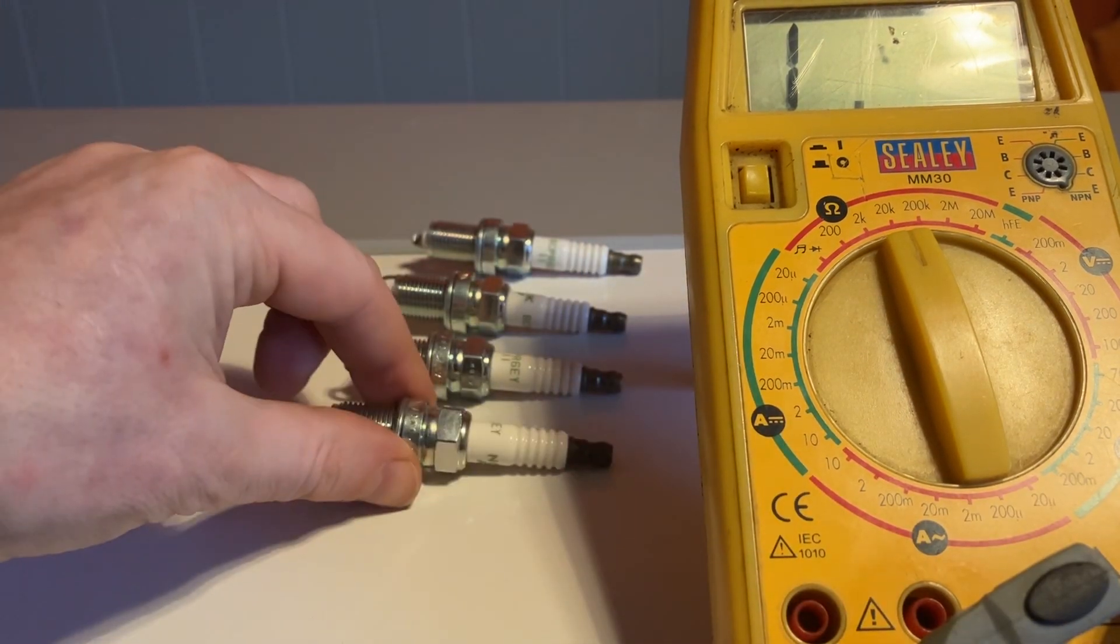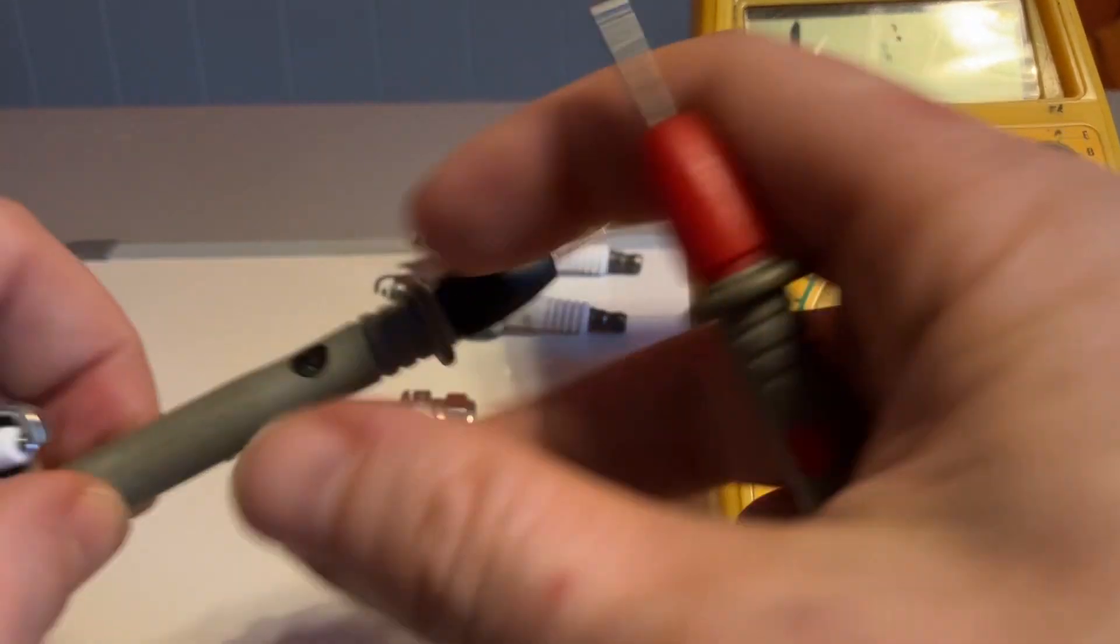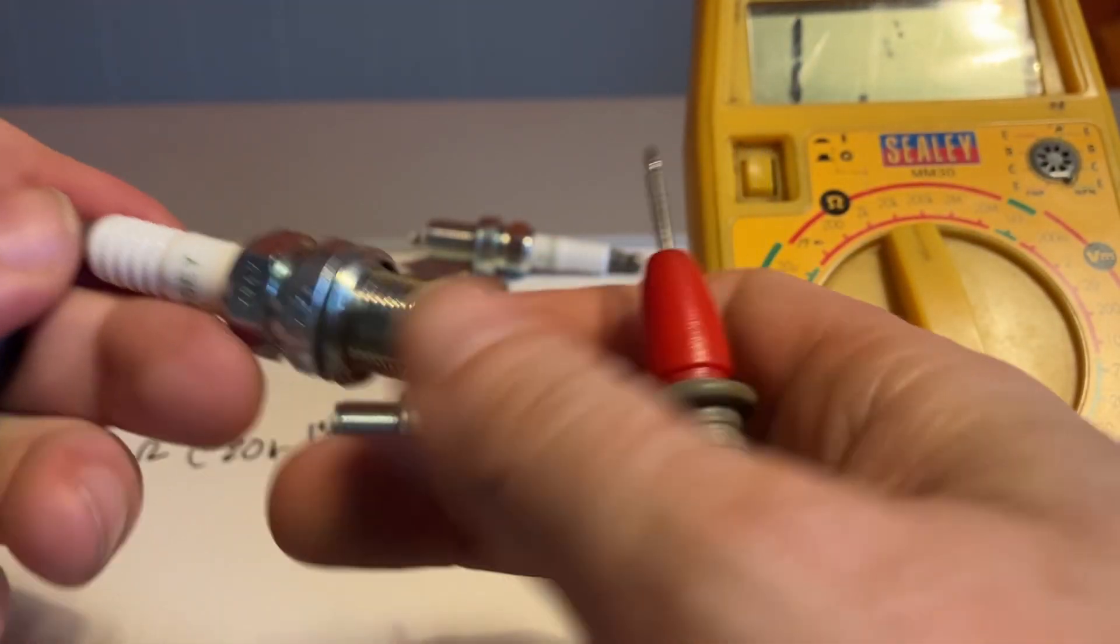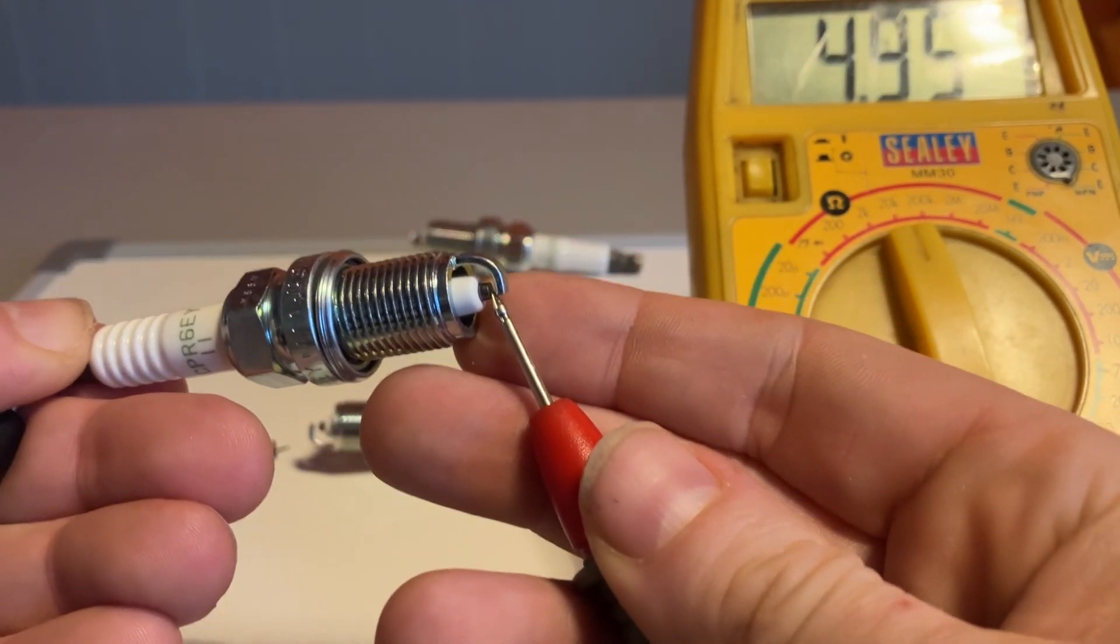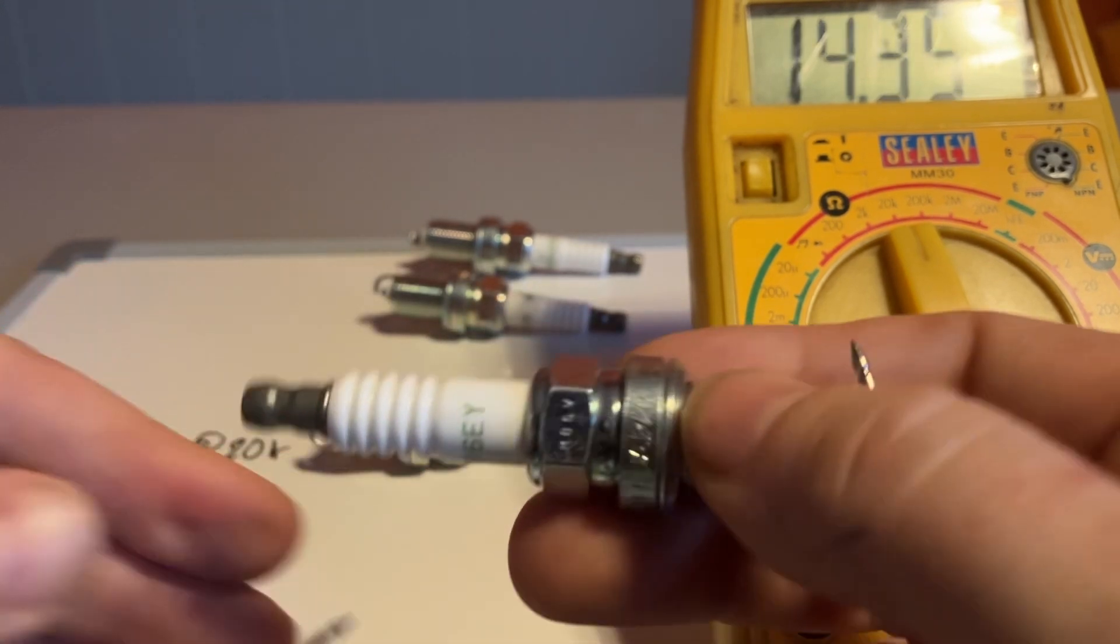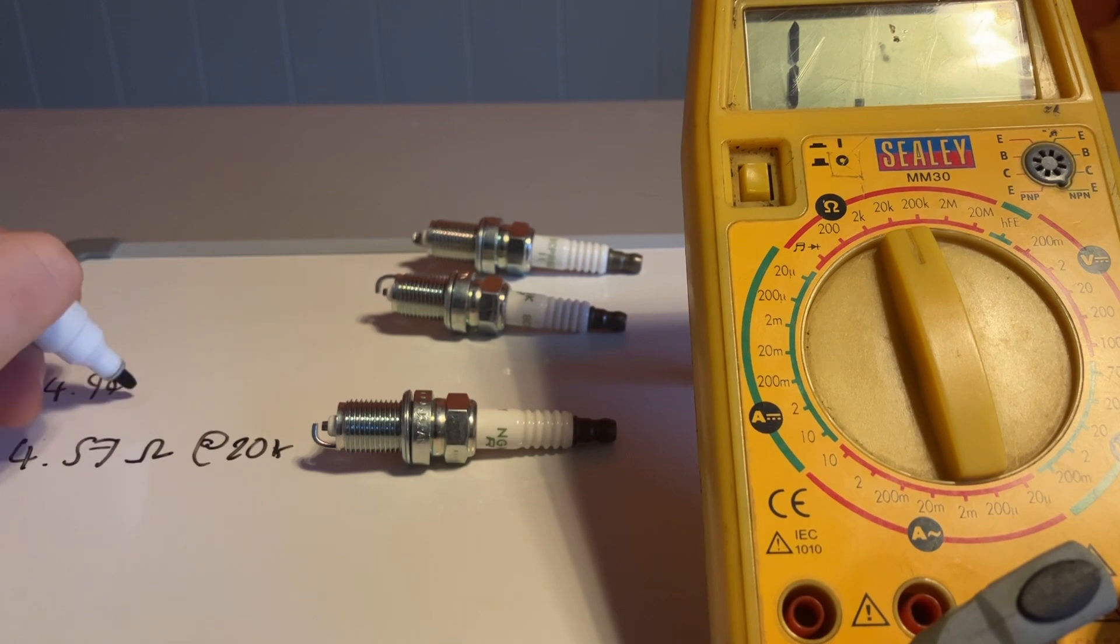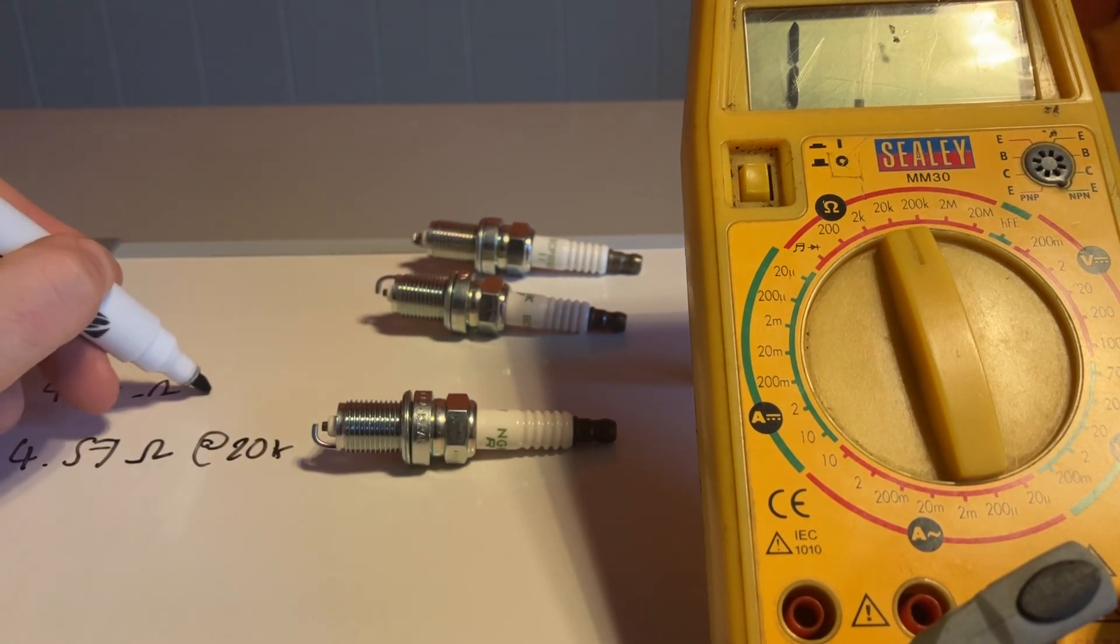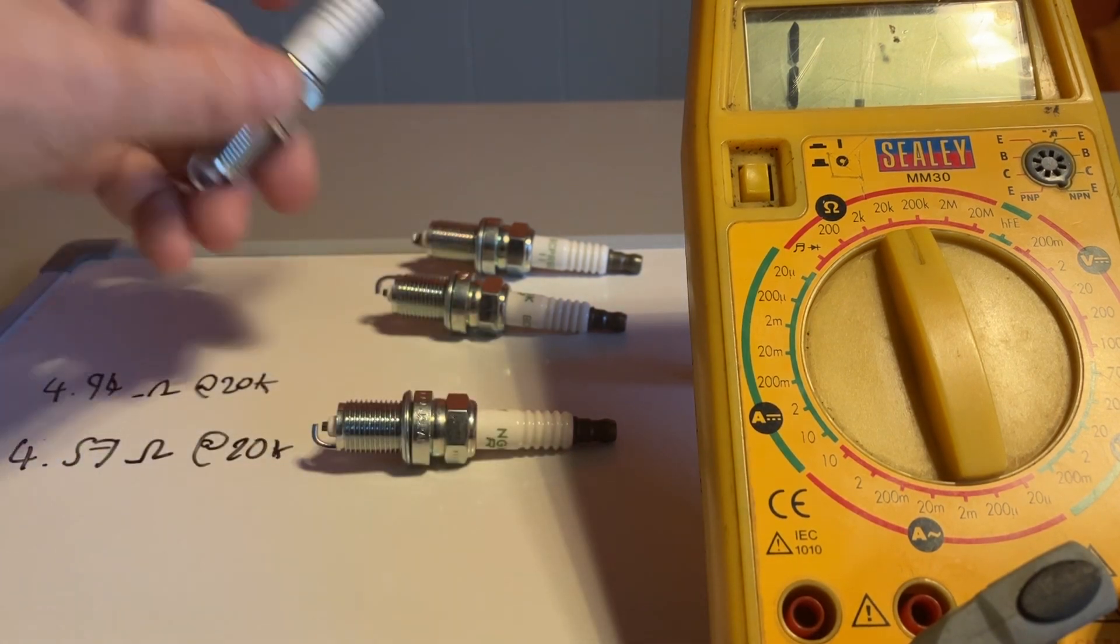So next one along, I'm going to check. Yet again, I'm going to put my earth side onto here and then this one onto the little contact there. 4.94 ohms at 20k, so I know what setting I've got my multimeter on.